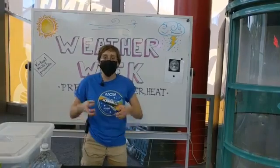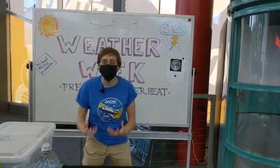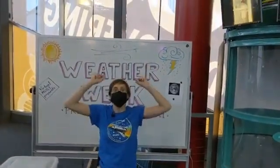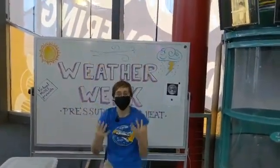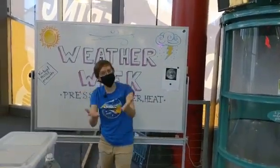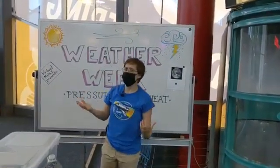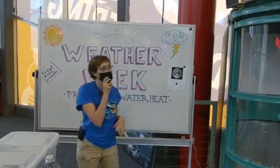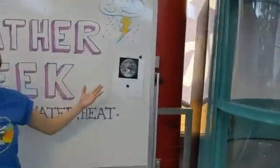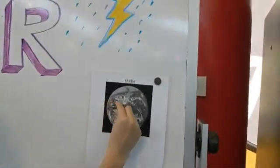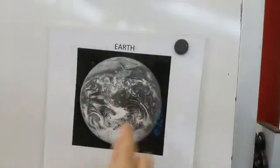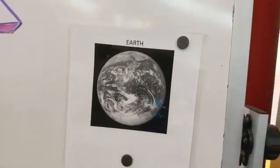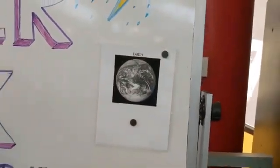Water vapor — water heats up, evaporates, rises from the surface if there's low pressure, until it condenses and rains down. Now, in the case of hurricanes, you might have noticed that they tend to happen in certain areas of our Earth. Hurricanes are usually formed right around this middle band here. Do you know what that's called? The equator.